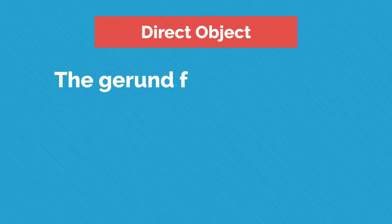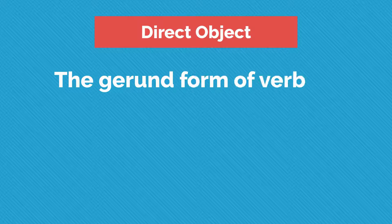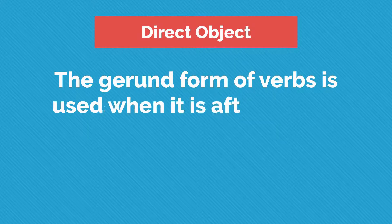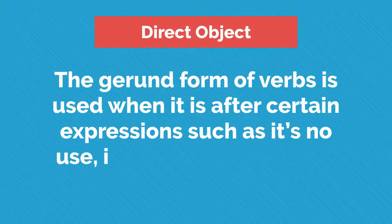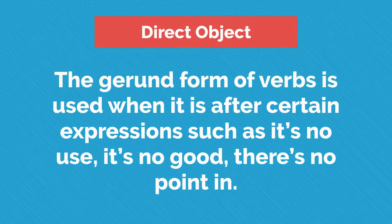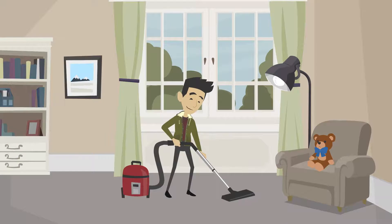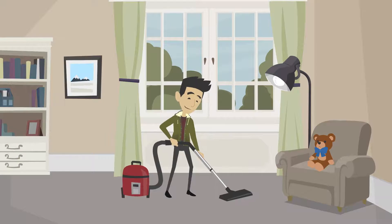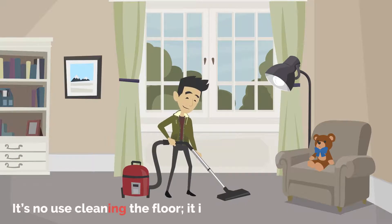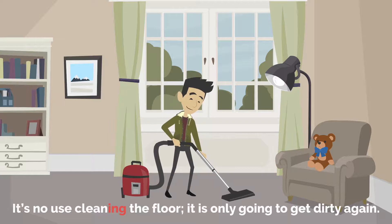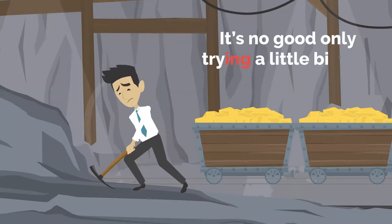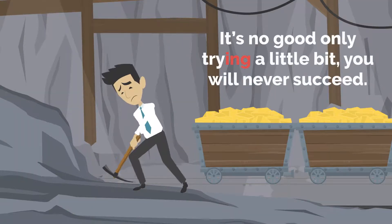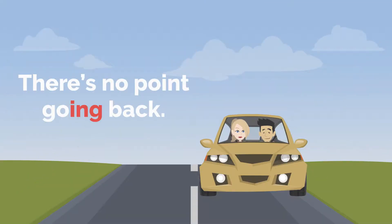The gerund form of verbs is used after certain expressions such as: It's no use, It's no good, and There's no point in. For example: It's no use cleaning the floor — it is only going to get dirty again. It's no good only trying a little bit — you will never succeed. There's no point in going back.